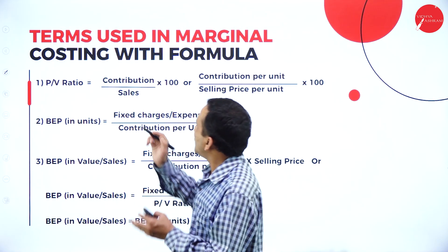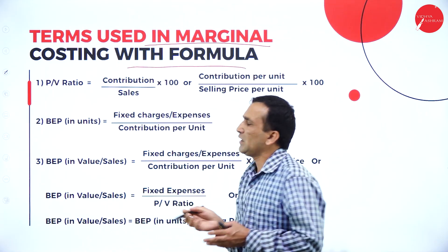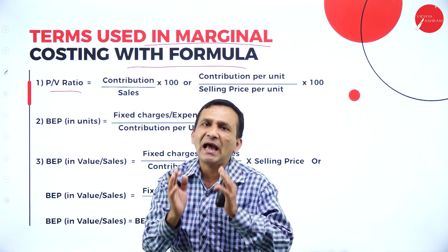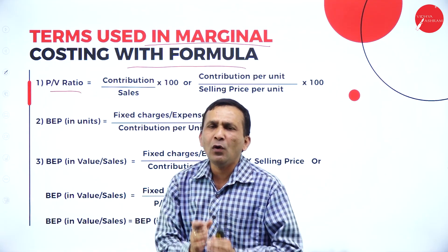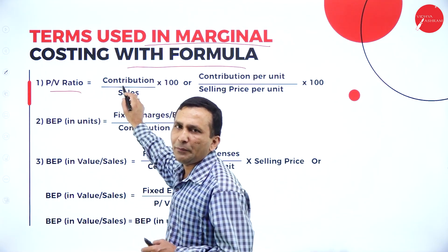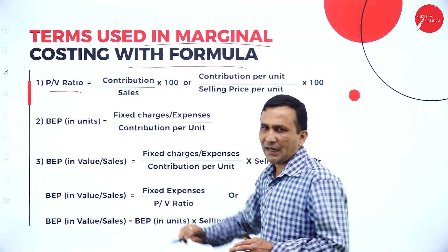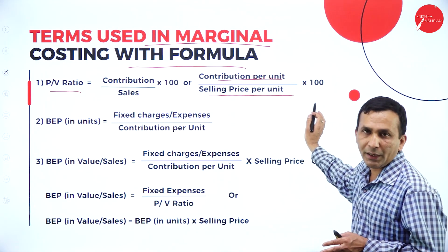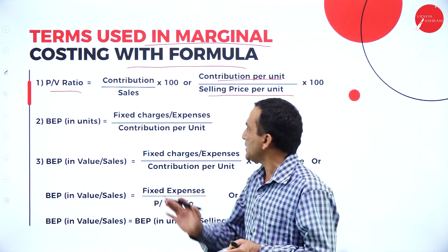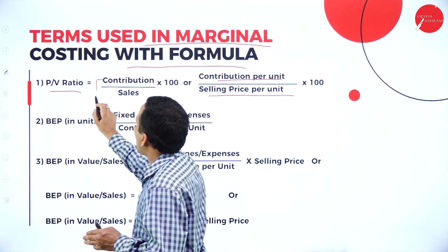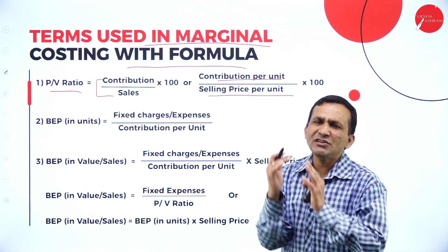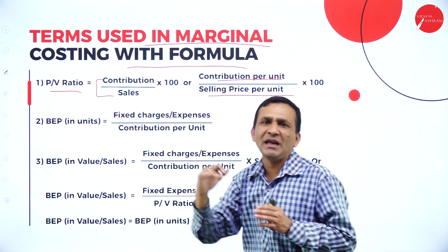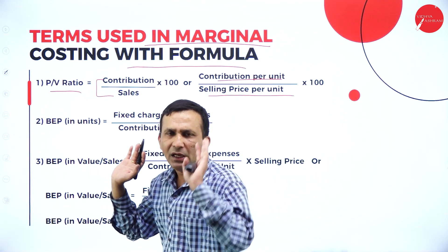Moving forward to the terms used in marginal costing with formulas. The first one is Profit Volume Ratio, or PV ratio. The PV ratio formula is contribution divided by sales, multiplied by 100. We need to establish the relationship between contribution and sales. In the marginal cost statement, sales appears at the top and contribution comes in between.